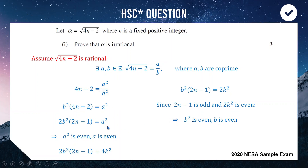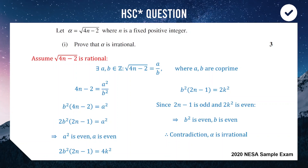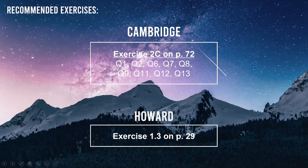We have shown both a and b are even, meaning they both have a factor of 2. This contradicts our assumption that a and b are co-prime. Therefore, our assumption was incorrect, and √(4n − 2) must be an irrational number. Thanks for watching — next time we'll be doing some inequalities, see you then.